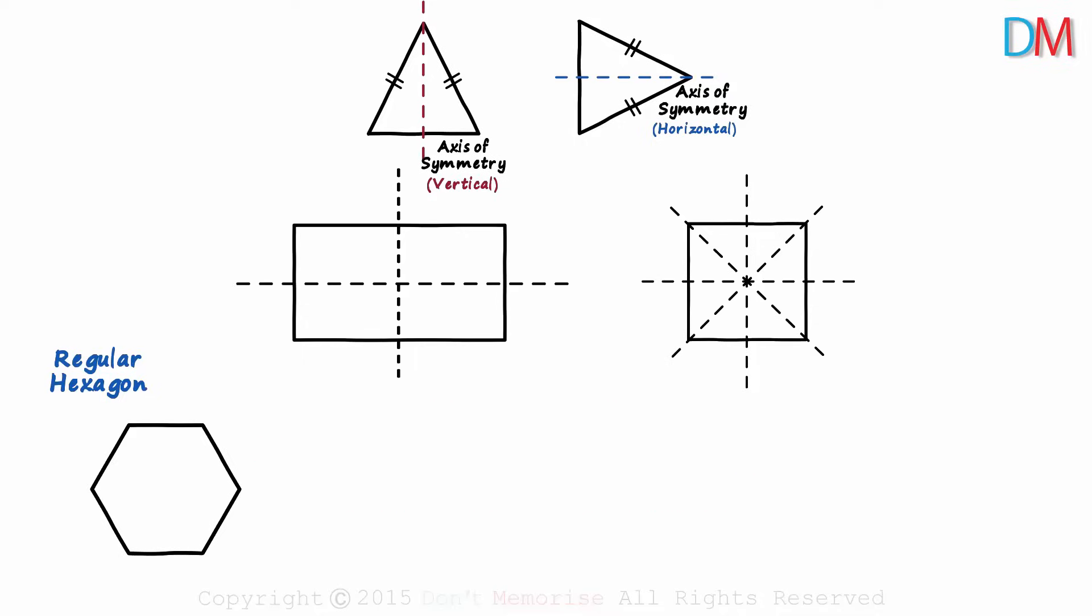Okay, let's see. The horizontal and the vertical ones are obvious. These two diagonals would also be the axis of symmetry. Do you think there are any more? Yes.